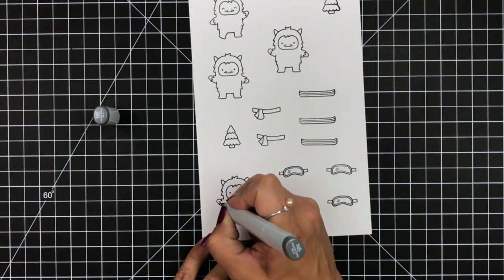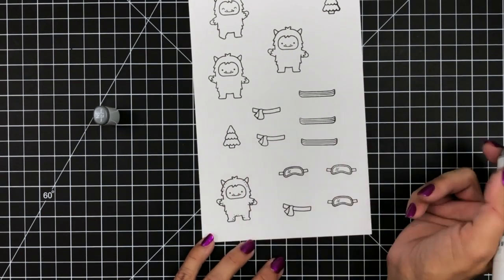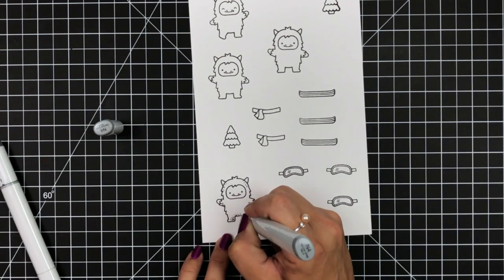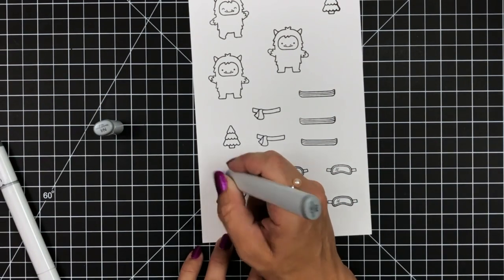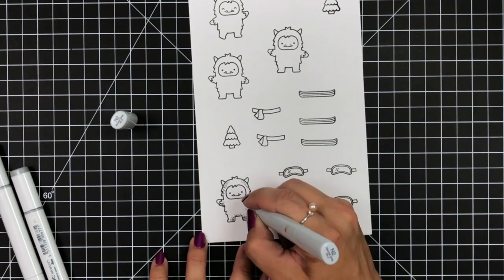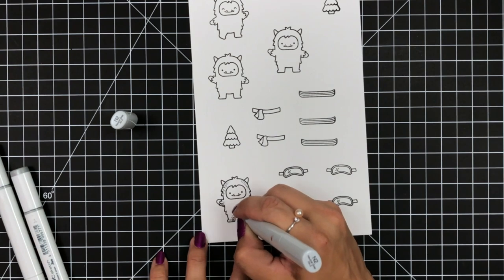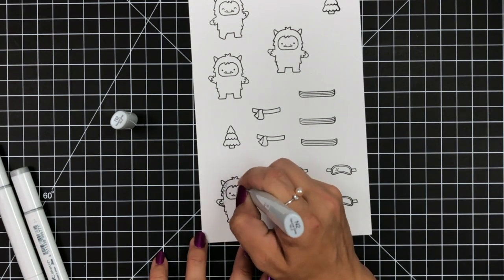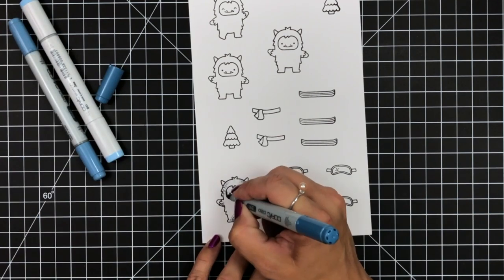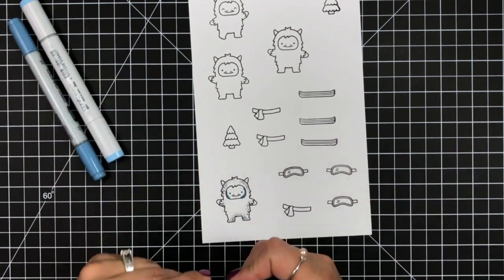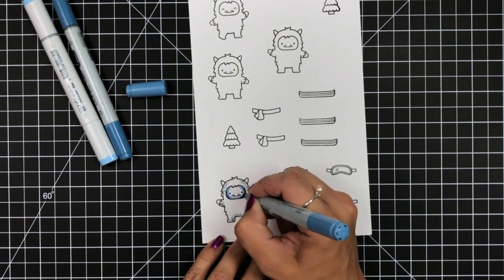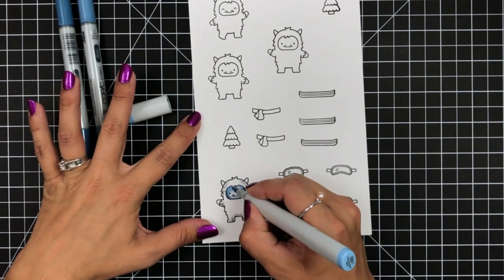So I am starting out by stamping and coloring my images. I stamped these images from the Yeti or Not stamp set from Lawn Fawn on white cardstock using Jet Black ink which is Copic friendly. Now I'm using a dot technique on the Yeti, adding dots instead of fully coloring the image in. This will make it appear as if it is white.